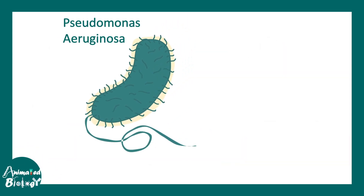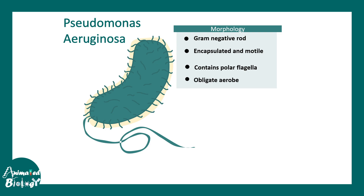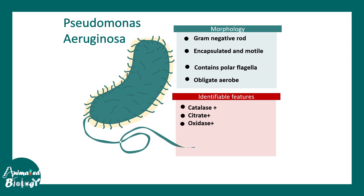Let's talk about some morphological features of Pseudomonas aeruginosa. It is a gram-negative rod. It is encapsulated and motile. It contains polar flagella, as you can see in this diagram. It is an obligate aerobe. In terms of identifiable features, it is catalase positive, citrate positive, and oxidase positive.